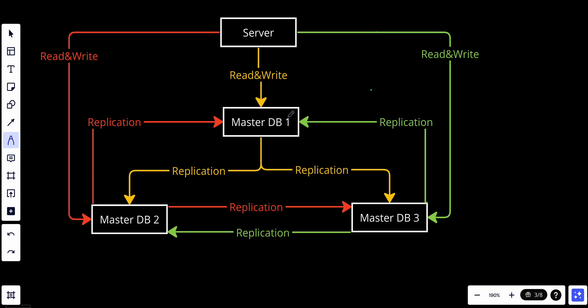Let's talk about how it works. In the multi-master configuration, there are multiple database servers — often referred to as nodes. Each node is both master and slave, meaning it can accept both read and write operations.